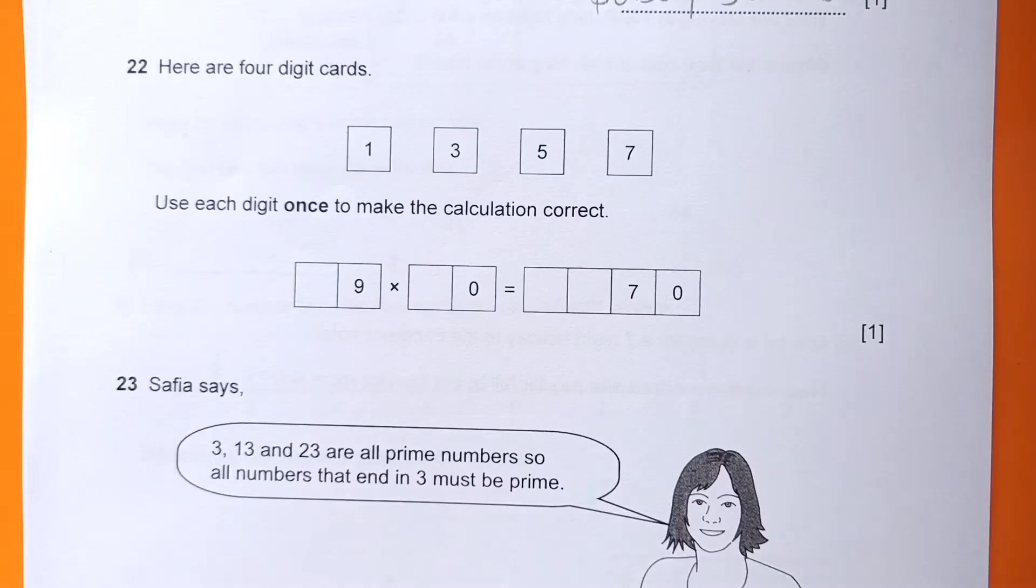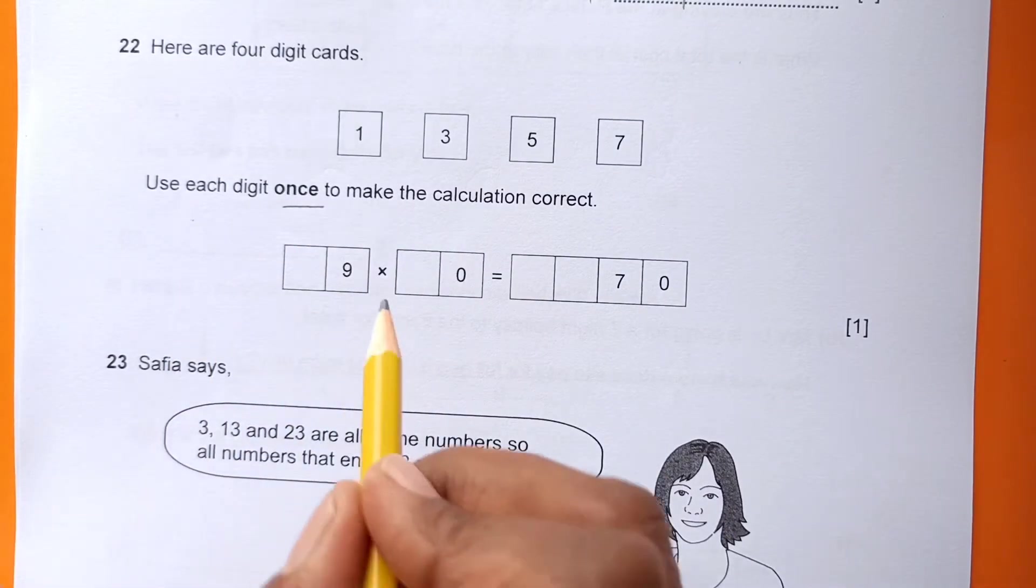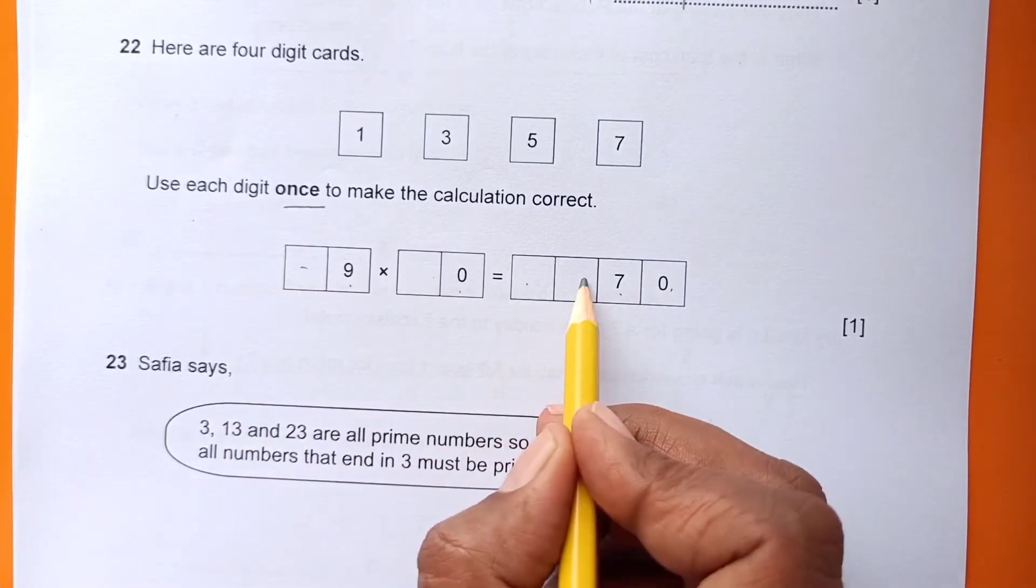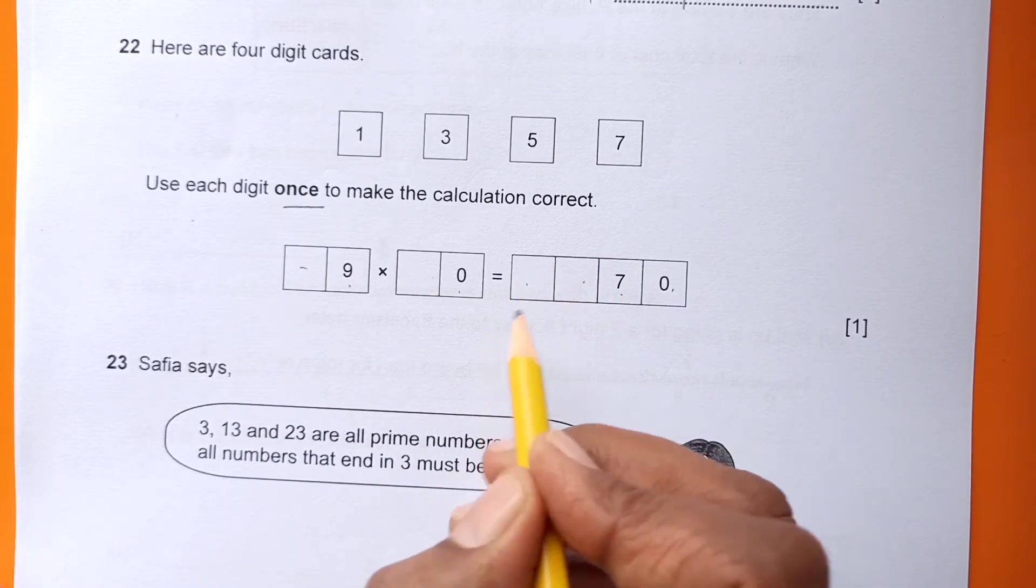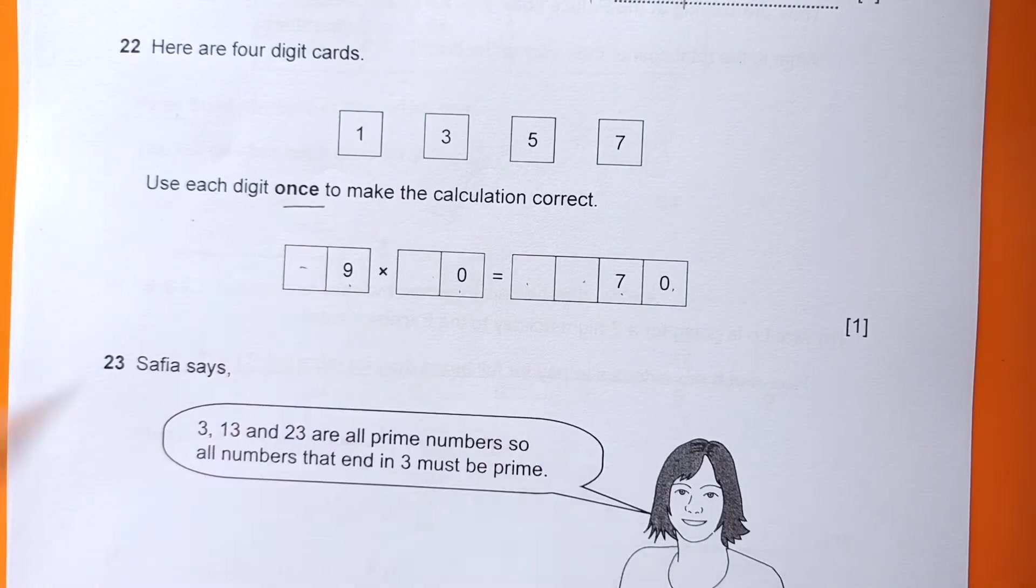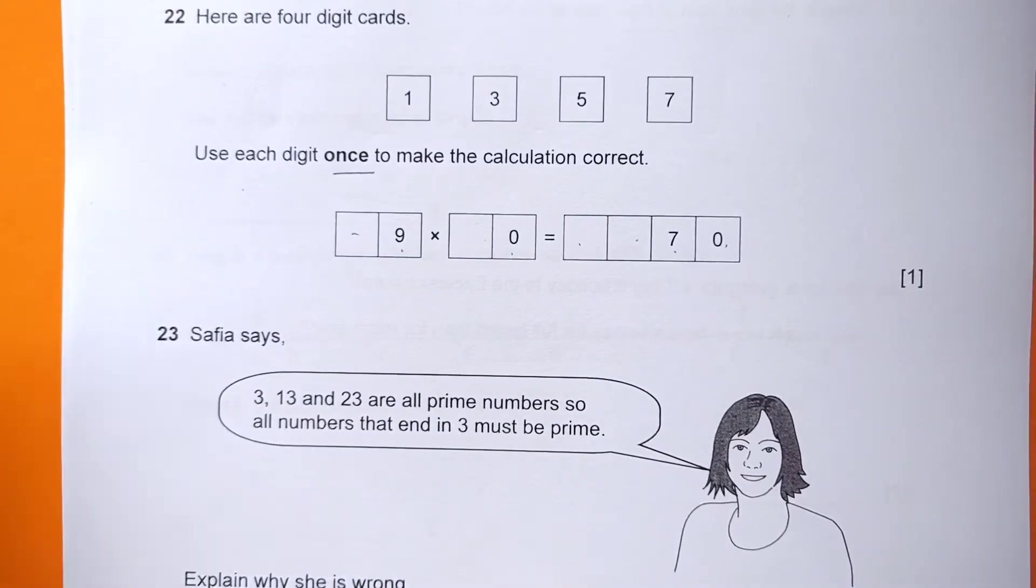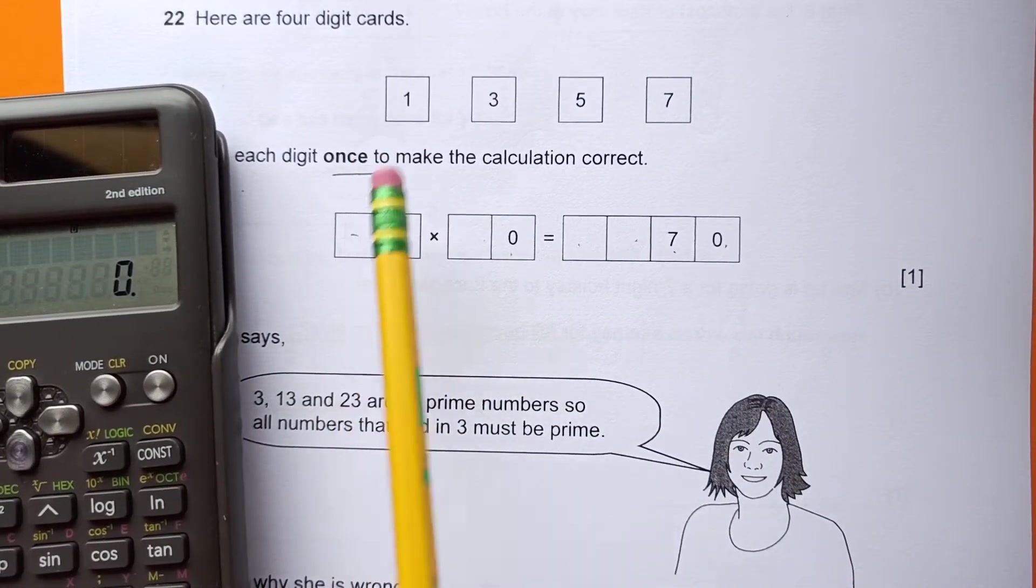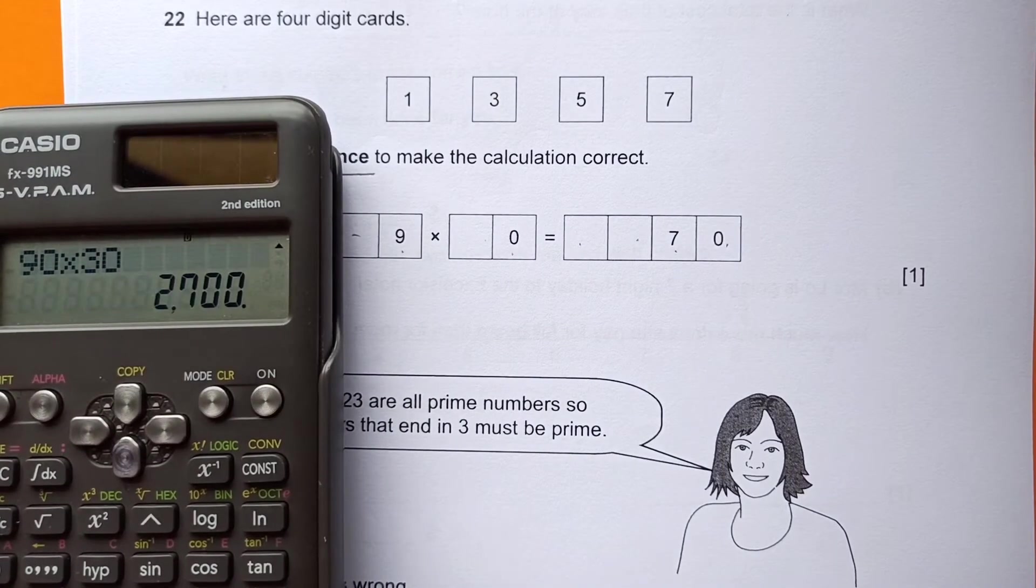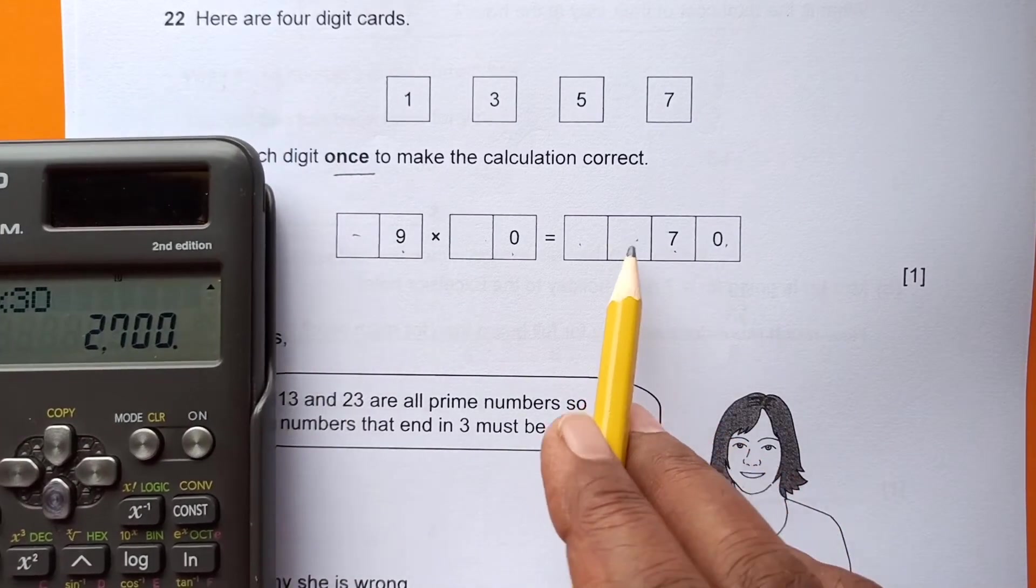Number 22: Here are four digit cards. Use each card once to make the calculation correct. So we have 9 times blank equals blank. We already have 70 here, and we have four places. If I write 19 times 30, I'm getting 2000 something.